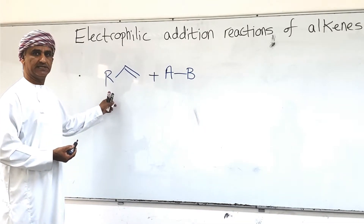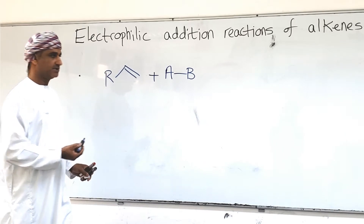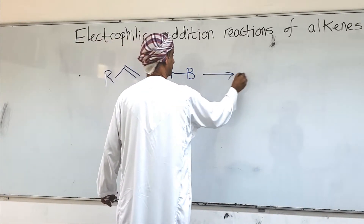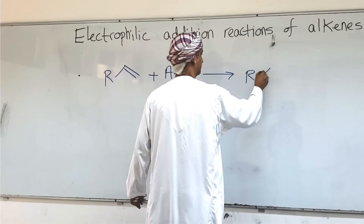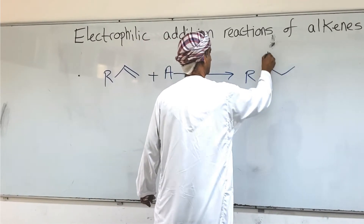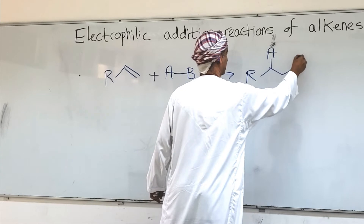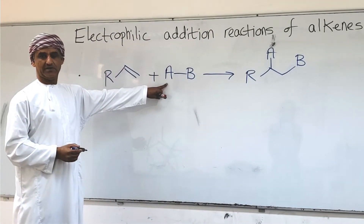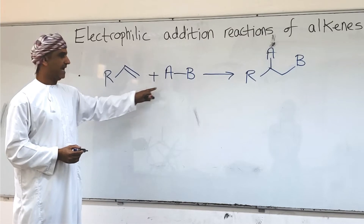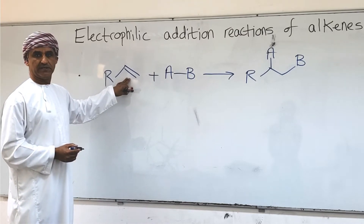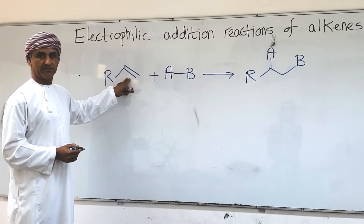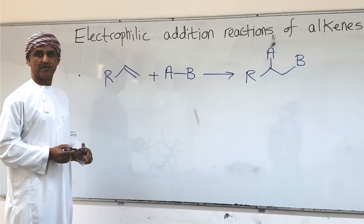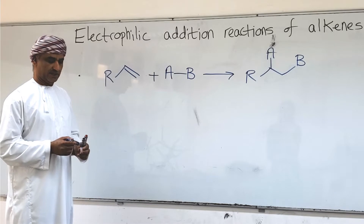This reaction between the alkene and the AB reagent can lead to an addition product where the A atom of the AB reagent adds to one of the carbon atoms of the carbon-carbon double bond, and B adds to the other carbon.